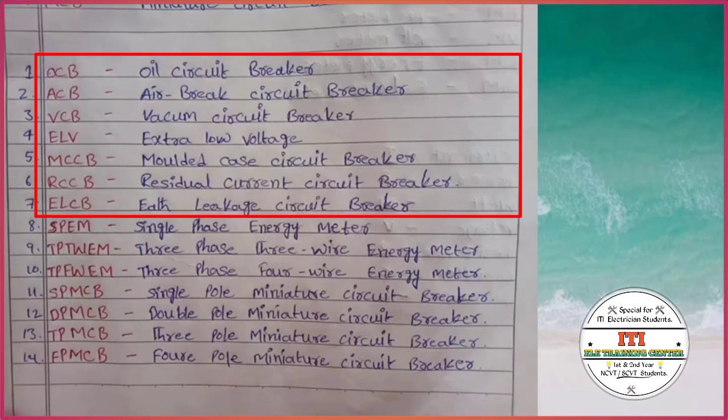ELV: extra low voltage. MCCB: molded case circuit breaker. RCCB: residual current circuit breaker. ELCB: earth leakage circuit breaker.